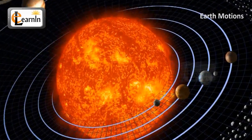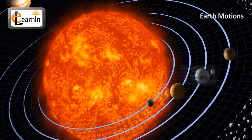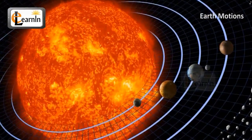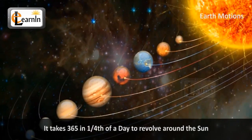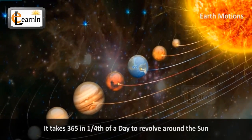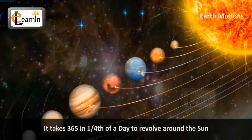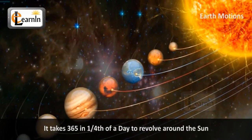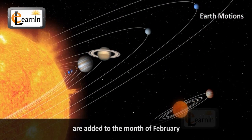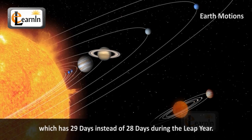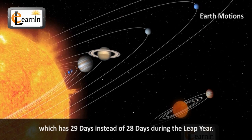Revolution is the motion of the earth around the sun in its orbit. It takes 365 and one-fourth of a day to revolve around the sun. The extra six hours — that one-fourth day — are added to the month of February, which has 29 days instead of 28 days during the leap year.